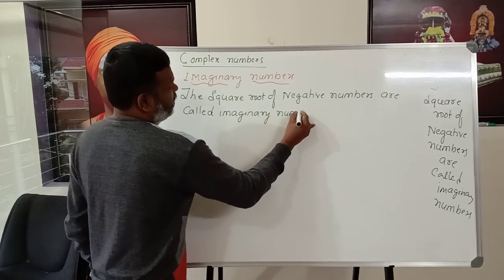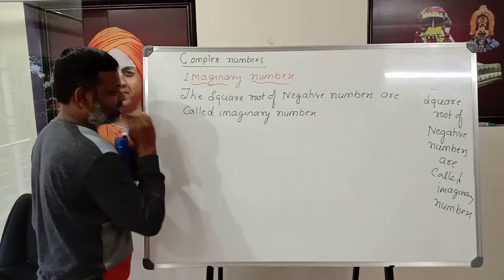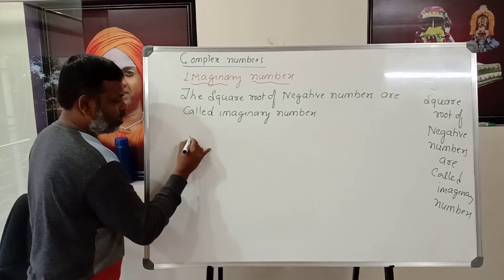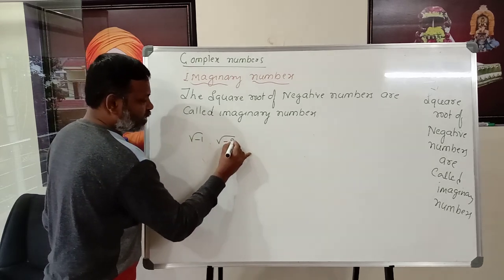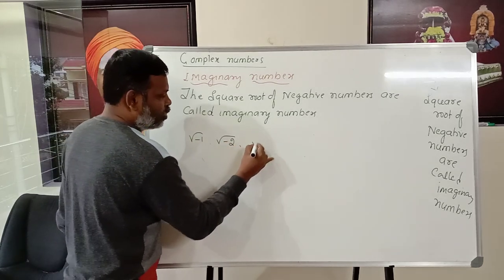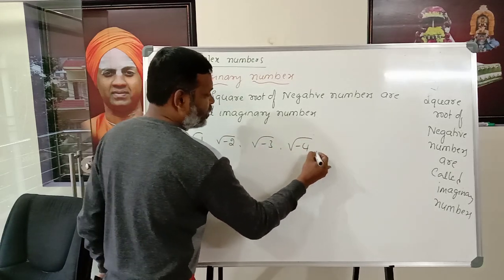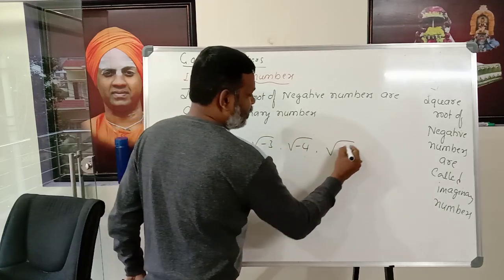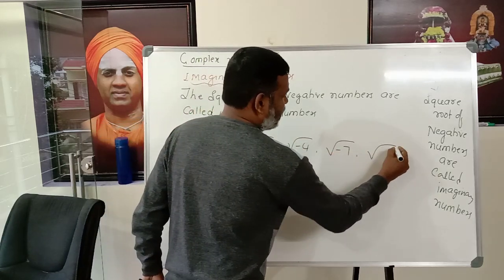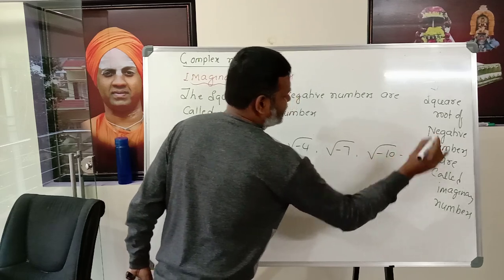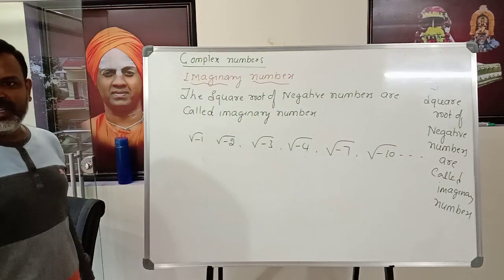To give examples: √(−1), √(−2), √(−3), √(−4), √(−7) and so on — all these are imaginary numbers.